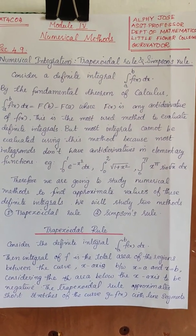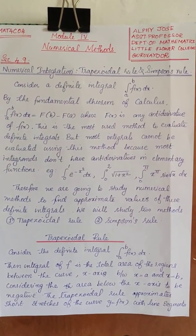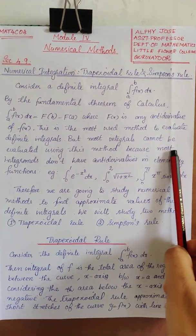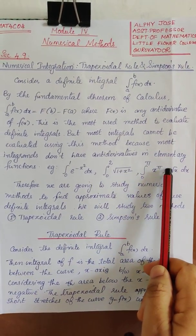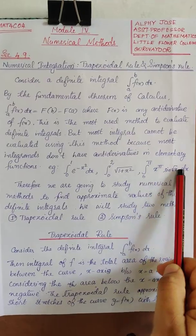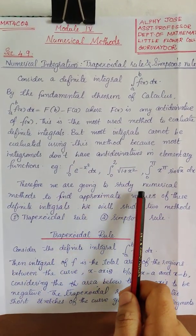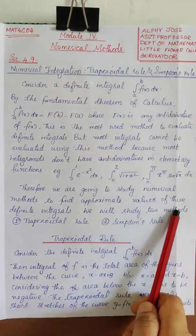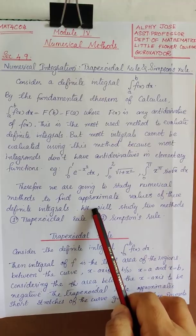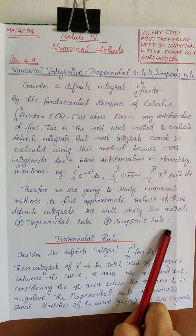But in many cases it is not so easy to find an antiderivative in elementary functions. For example, in these three examples it is hard to find the antiderivative for these integrals. So we are going to discuss some numerical methods which will give us approximate value of these definite integrals. And here we will study two methods, trapezoidal rule and the Simpson's rule.